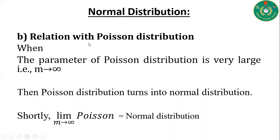Now the relation with Poisson distribution. When the number of trials n is very large, that is n tends to infinity, and the probability of success p tends to 0, and the mean m tends to infinity, then Poisson distribution turns into normal distribution. That is, limit m tends to infinity, Poisson distribution goes to normal distribution.